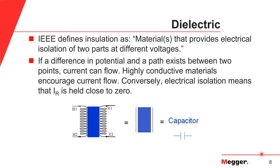IEEE defines insulation as a material or system of materials that provides electrical isolation of two parts at different voltages. If both a difference in potential and a path exists between two points, current can flow. Highly conductive materials placed between two such points will promote current flow, while a dielectric will restrict real current flow. So electrical isolation means that resistive current is held close to zero, and this behavior is very effectively modeled by the use of a capacitor.